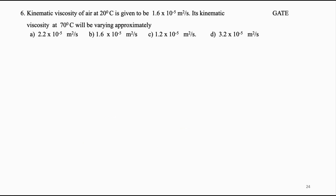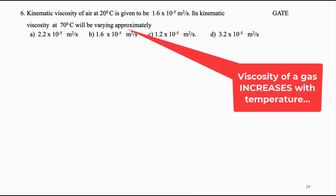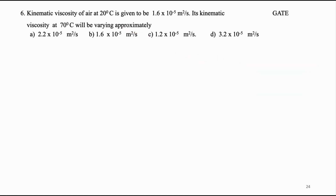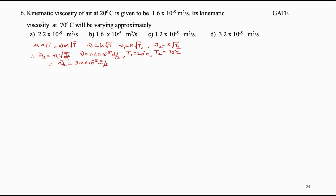Kinematic viscosity of air at 20°C is given as 1.6 × 10⁻⁵ m²/s. Kinematic viscosity at 70°C will be approximately: (A) 2.2 × 10⁻⁵, (B) 1.6 × 10⁻⁵, (C) 1.2 × 10⁻⁵, (D) 3.2 × 10⁻⁵ m²/s. Kinematic viscosity of a gas increases with temperature and is proportional to the square root of temperature; on that basis it comes to 3.2 × 10⁻⁵ m²/s. Answer is D.